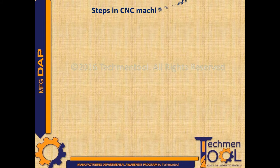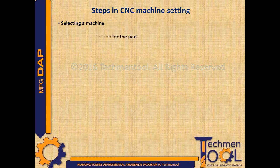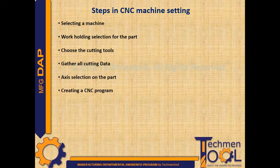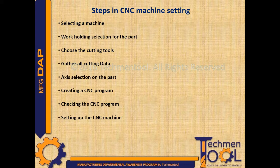Steps in CNC machine setting: selecting a machine, work holding selection for the part, choosing the cutting tools, gathering all cutting data, access selection on the part, creating a CNC program, checking the CNC program, setting up the CNC machine, and program proved.